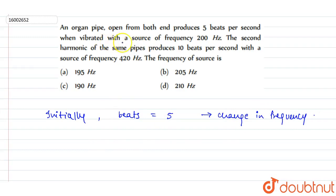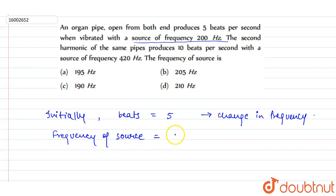The second statement says it is vibrating with a source of 200 Hz. Beats represent a change in frequency — it is one frequency minus the other, n1 minus n2. So the frequency of the source will be 200 plus 5 or 200 minus 5.